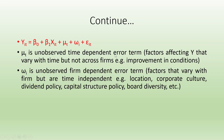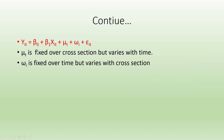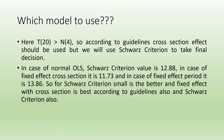mu_t_i represents unobserved time-dependent error term factors affecting Y that vary with time but not across firms — for example, improvement in conditions. omega_i represents unobserved firm-dependent error term factors that vary with firm but are time independent — for example, location, corporate culture, dividend policy, capital structure policy, and board diversity. So mu_t_i is fixed across cross-sections but varies with time, while omega_i is fixed over time but varies with cross-section.